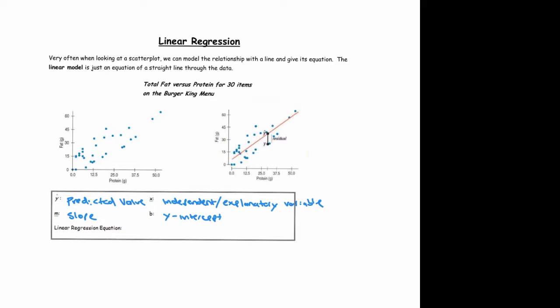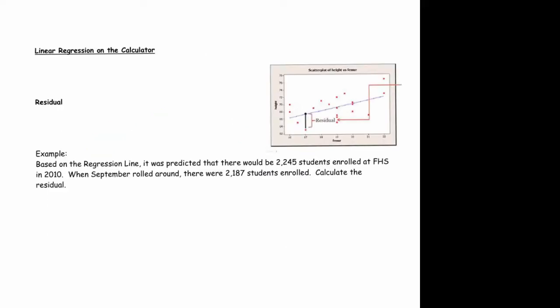The linear regression equation will always have this form: y-hat equals mx plus b. Notice I'm saying y-hat because it's a predicted value—the linear model represents predicted values of the response variable, not the actual ones.